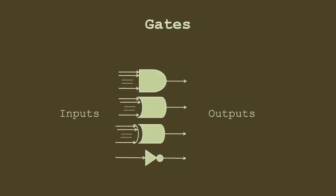These are the common symbols used for logic gates. The first is the AND gate - it outputs one if all inputs are one; if any input is zero the output will be zero. This is the OR gate - it outputs one if any input is one, and only outputs zero if all inputs are zero. Similarly, for the AND gate, if any input is zero the output will be zero.